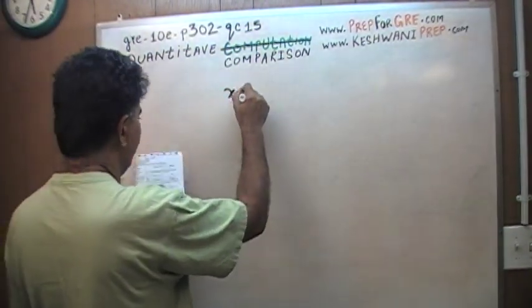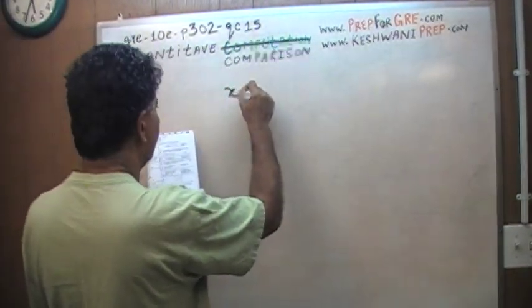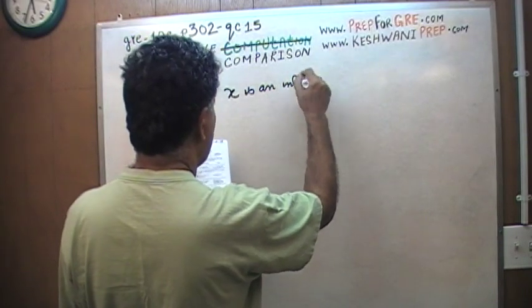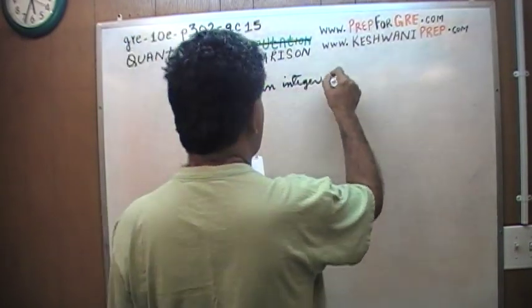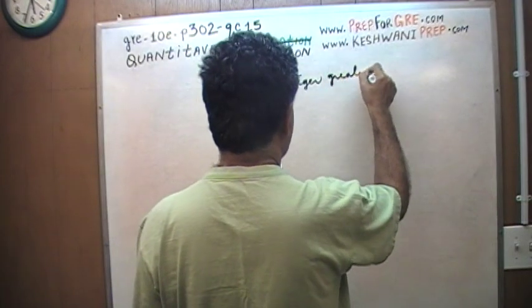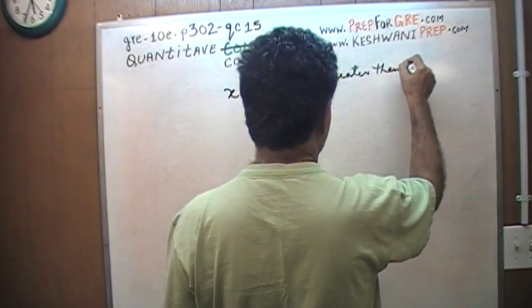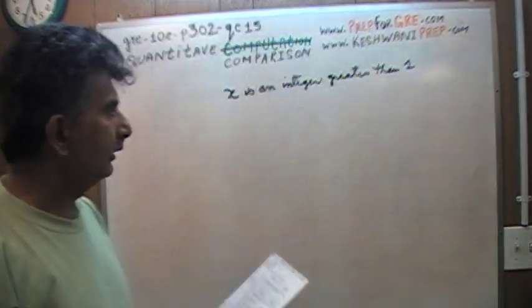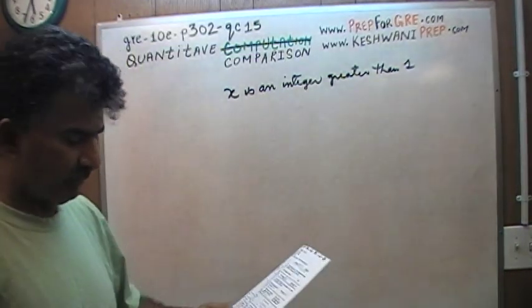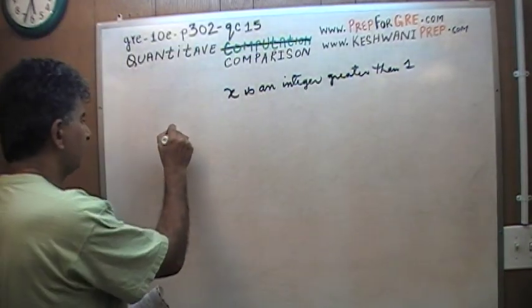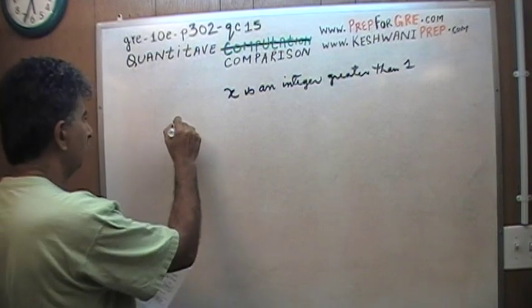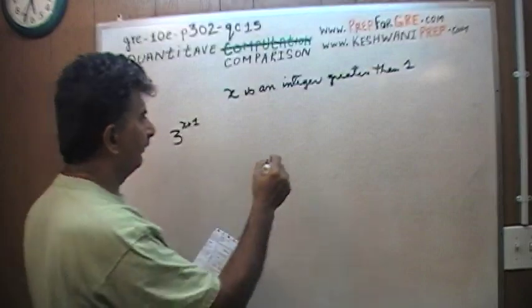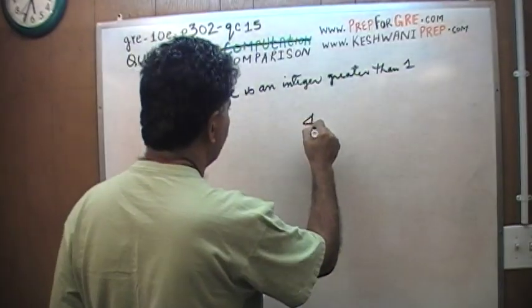Here is the problem. We are told that x is an integer greater than one — so x is a whole number more than one. You are asked to compare these two quantities: 3 raised to the power of x plus 1, versus 4 raised to the power of x.